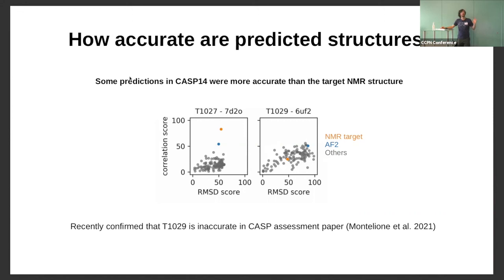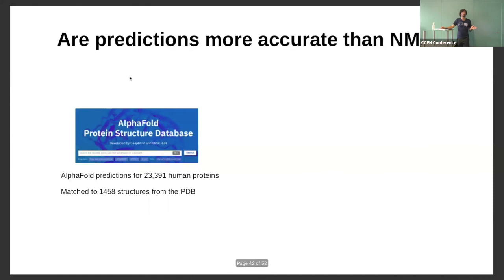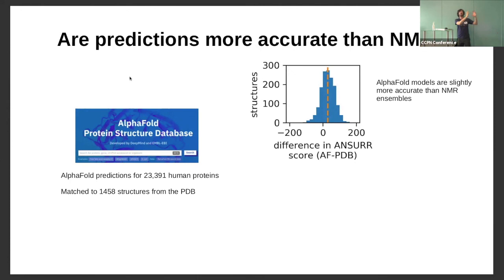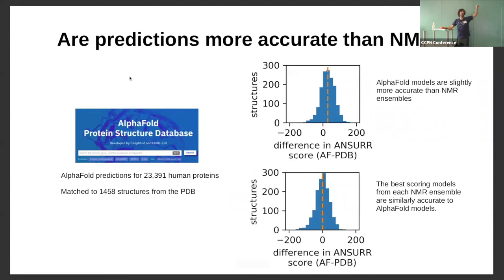It was pretty cool to have spotted that in December — it only takes a minute to run ANSWER. Predicting structures can be more accurate than NMR structures, though I only have an N of two. More recently, DeepMind published predictions for all human protein structures — all 24,000. I took these and matched them to PDB NMR structures, ending up with nearly 1,500, and validated both the AlphaFold predictions and the NMR ensembles. AlphaFold models are slightly more accurate than NMR ensembles on average. However, if you go into the ensemble and pick out the best scoring model, that difference disappears — the best scoring models from NMR ensembles are similarly accurate to AlphaFold models. Of course, the difference is that your NMR structure takes many months or years to solve, whereas an AlphaFold structure takes 10 minutes.